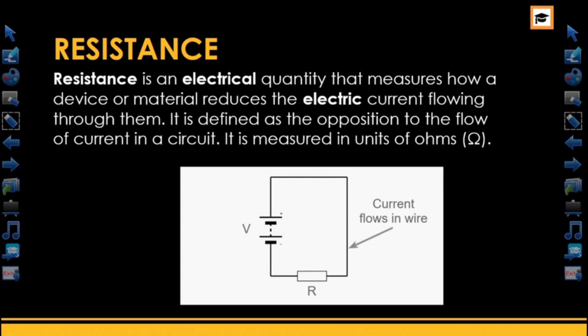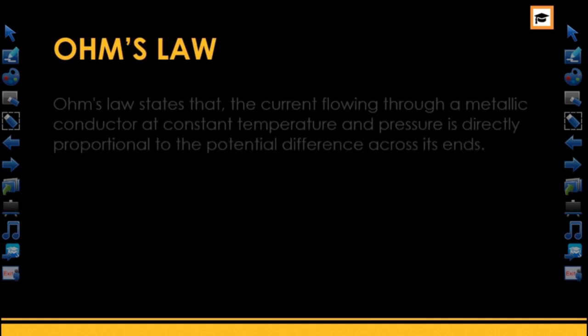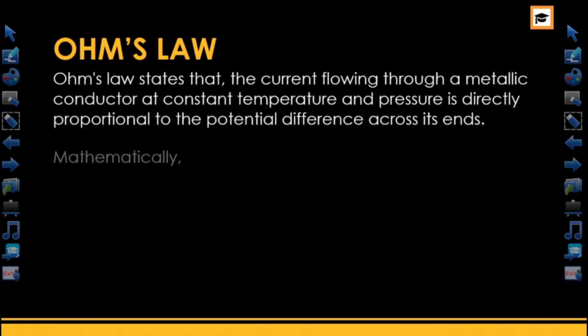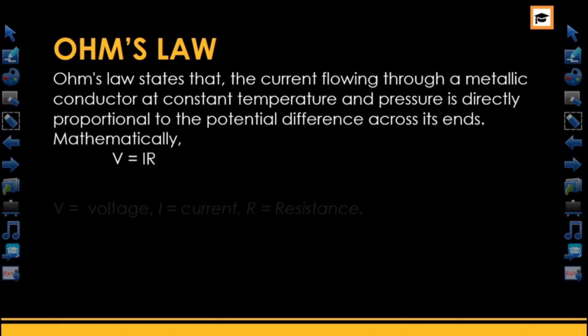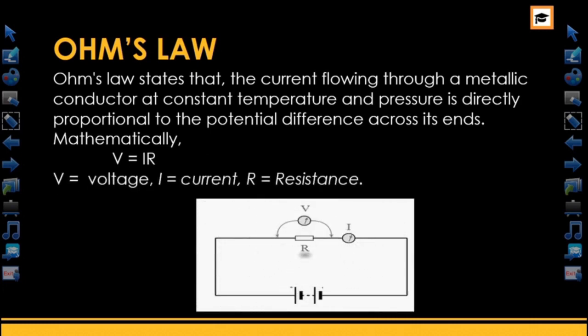Now let's take a look at Ohm's Law. Ohm's Law states that the current flowing through a metallic conductor at constant temperature and pressure is directly proportional to the potential difference across its ends. Mathematically, V equals IR, where V is voltage, I is current, and R is resistance. Looking at the circuit shown, you have the resistor, the current, the voltage, and the cell.